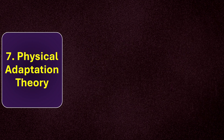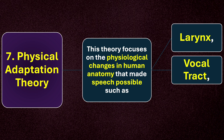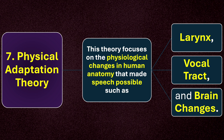Moving on to number seven: physical adaptation theory. This theory focuses on the physiological changes in human anatomy that made speech possible, such as changes to the larynx, vocal tract, and brain. Scientists believe that humans first developed physically, and at a later stage the mind developed, helping the organs of speech to allow humans to speak.